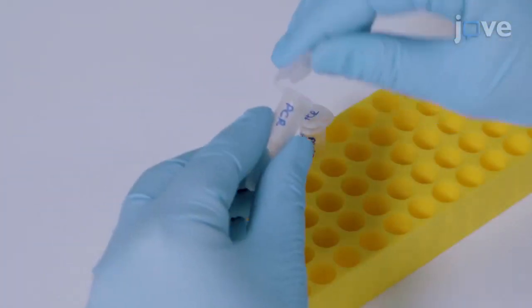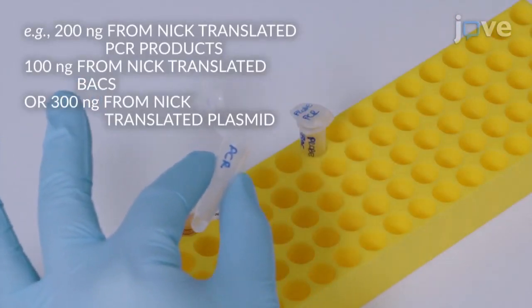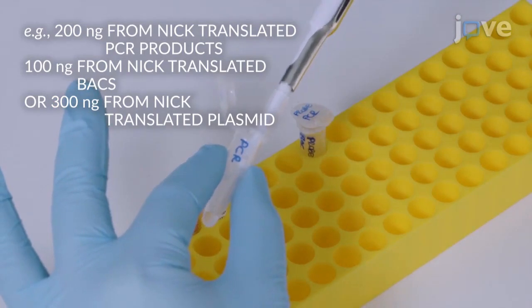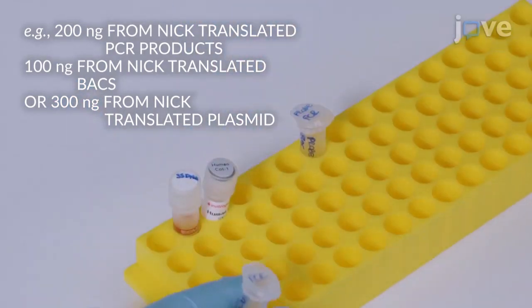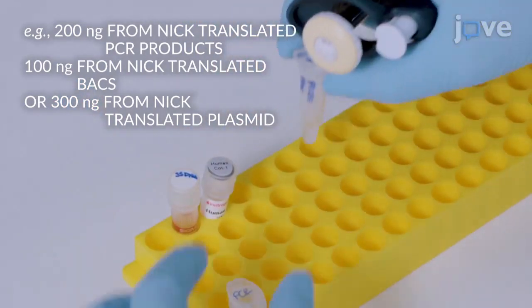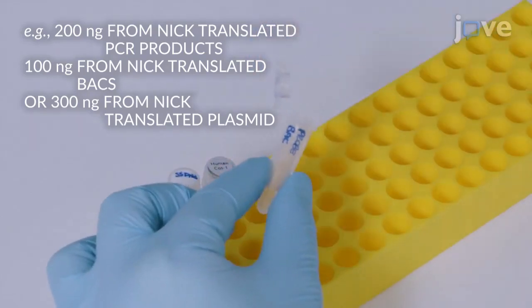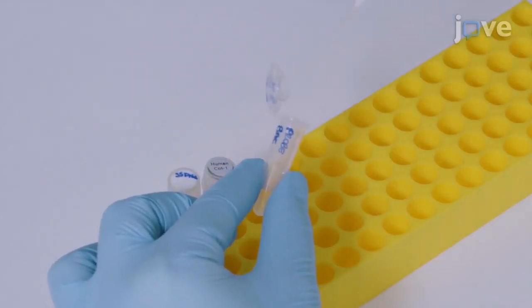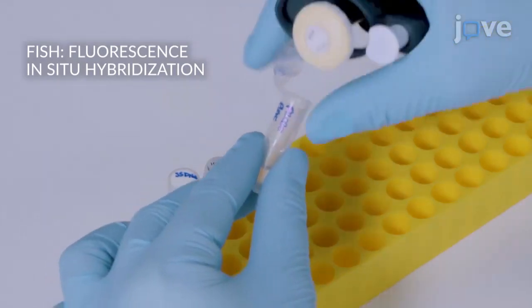For each DNAFISH experiment, precipitate the appropriate quantity of probe according to the starting DNA material from which the probes were produced, in 150 microliters of double-distilled water, 20 micrograms of unlabeled salmon sperm DNA,